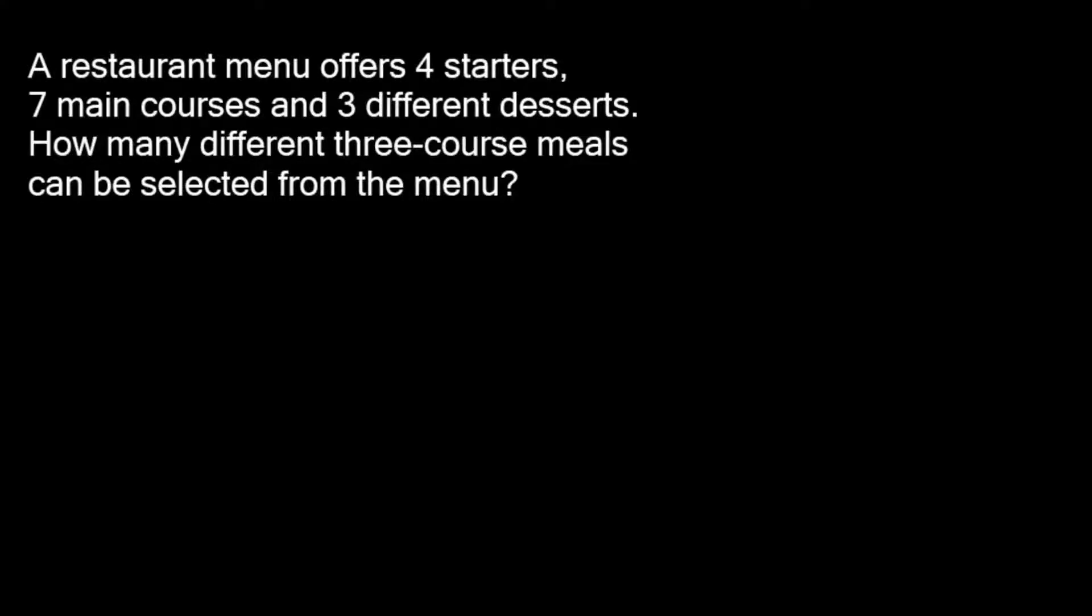I'm going to explain to you what the product rule for counting is. It's a really simple technique that we use to figure out how many different possibilities there are for something happening. Looking at this, we can see that it's talking about product straight away, and so we know that it's going to involve multiplying numbers at some point. That's how we get a product.